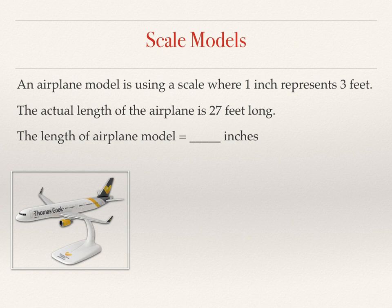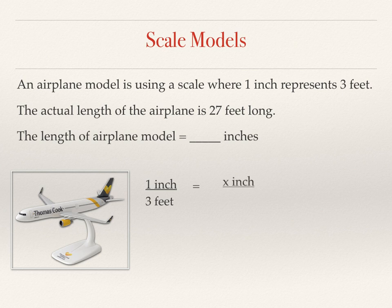The given information can be written as a ratio: one inch over three feet. We can set that ratio equal to another ratio involving 27 feet on the bottom and x inches on the top. This math equation is called a proportion — something you learned about in middle school.